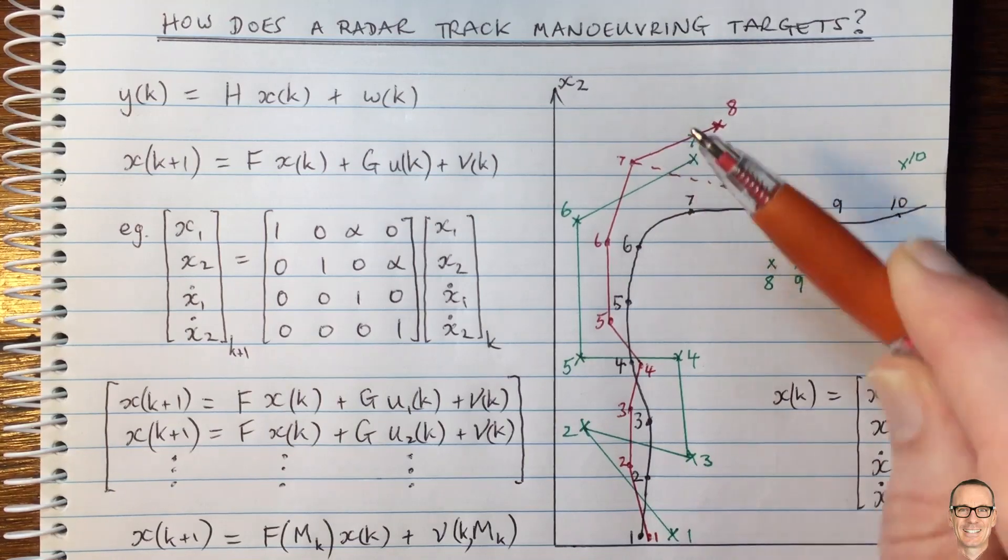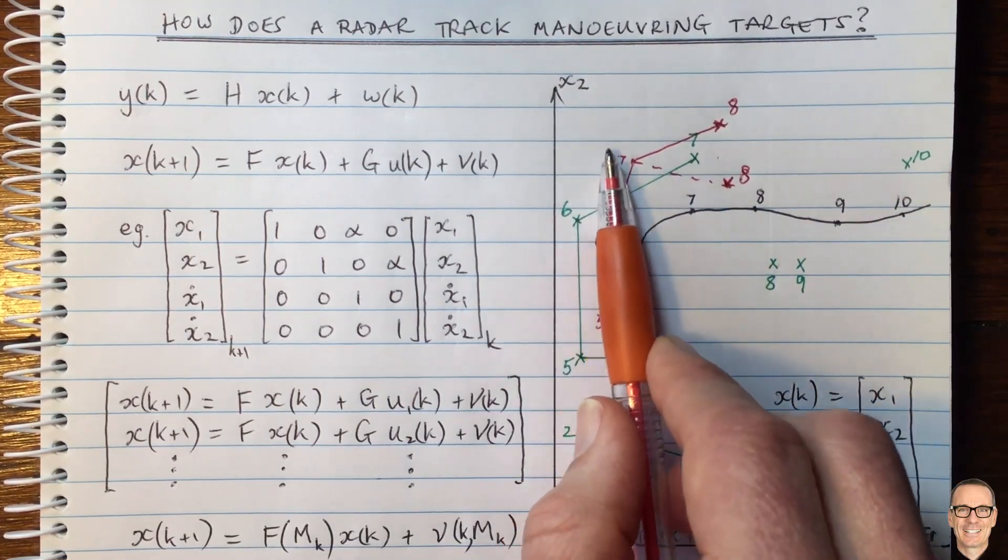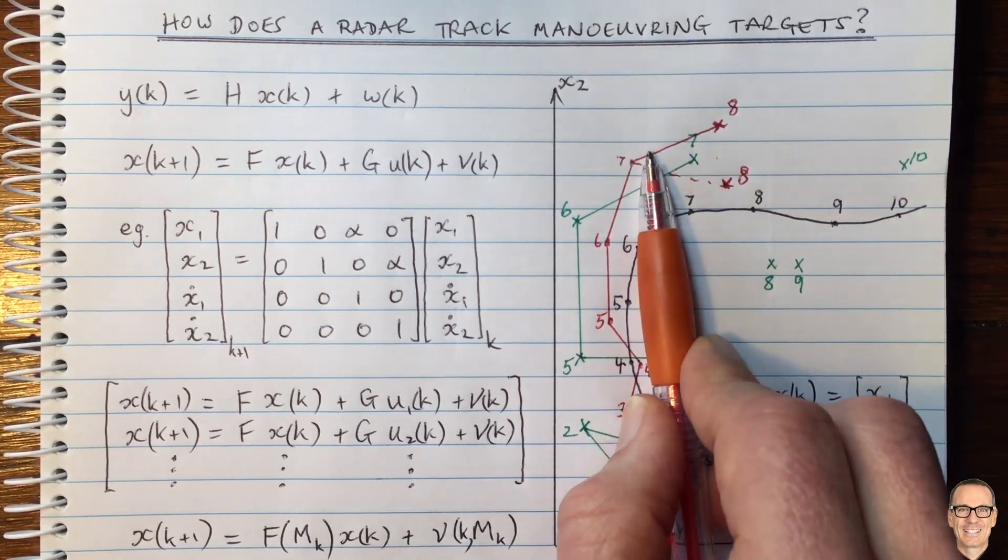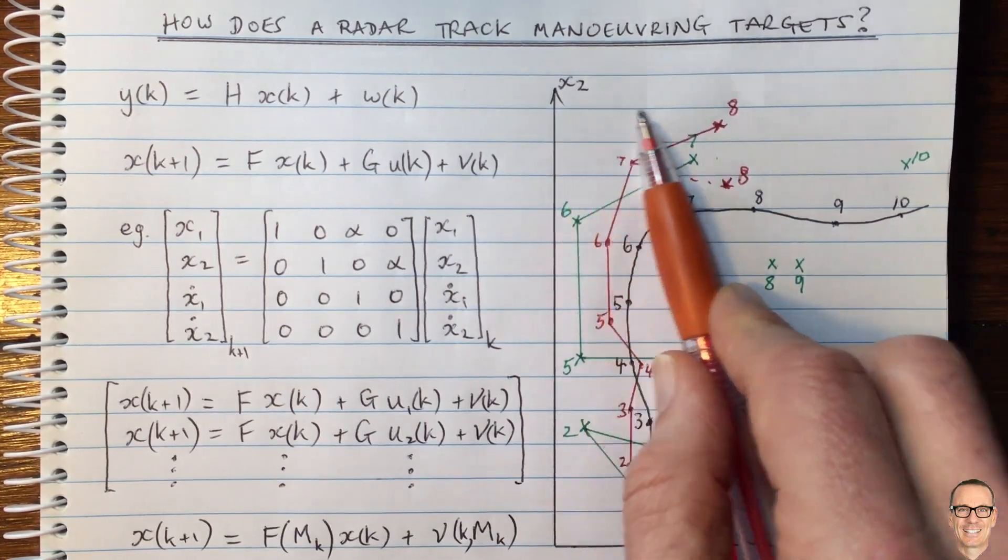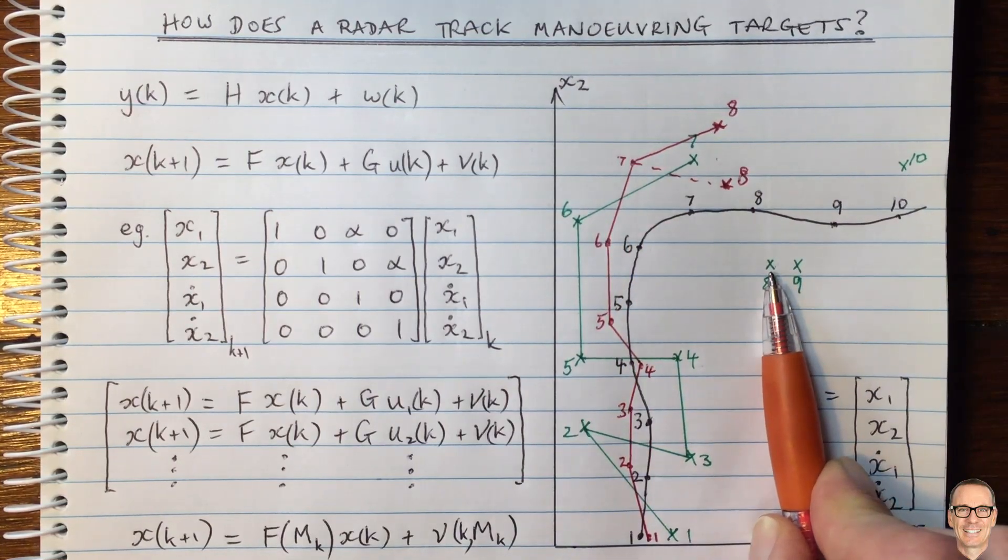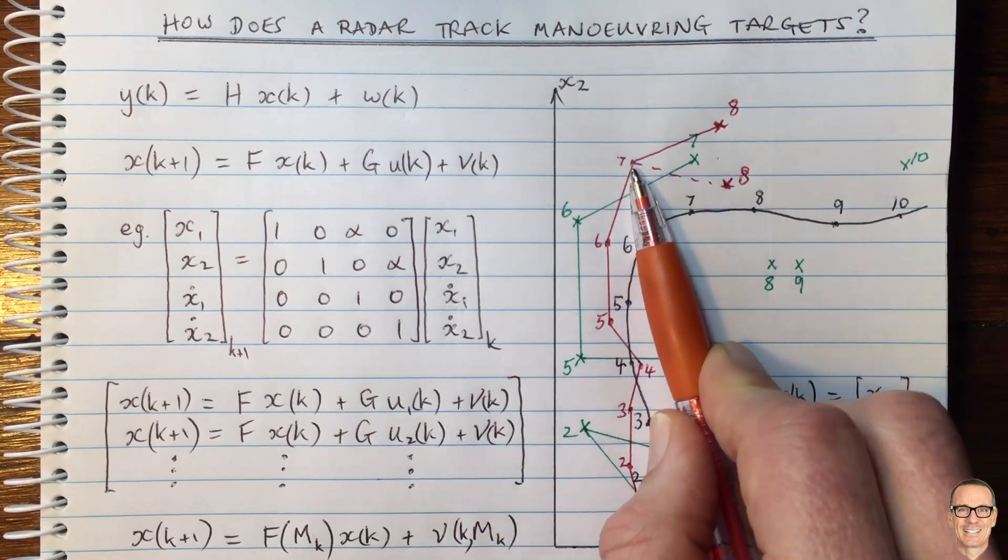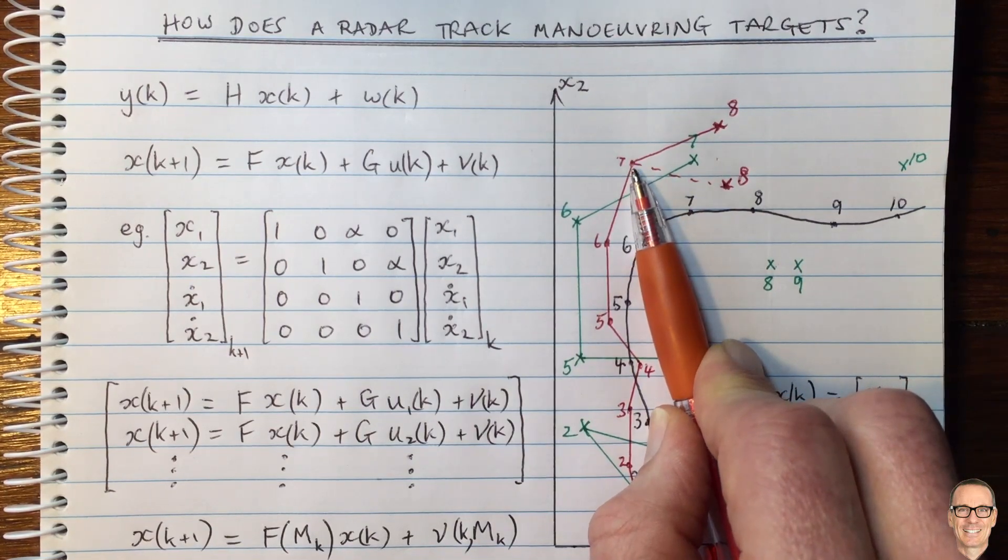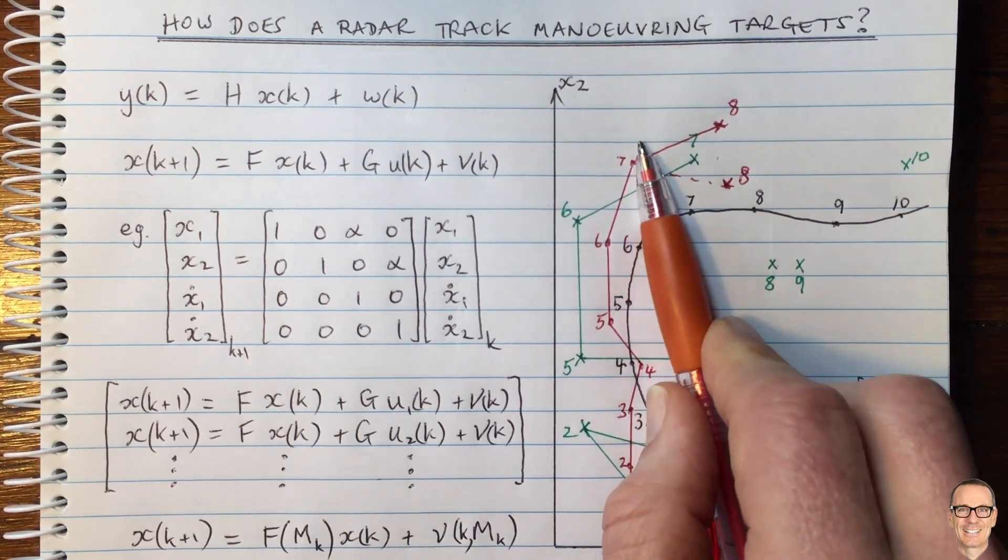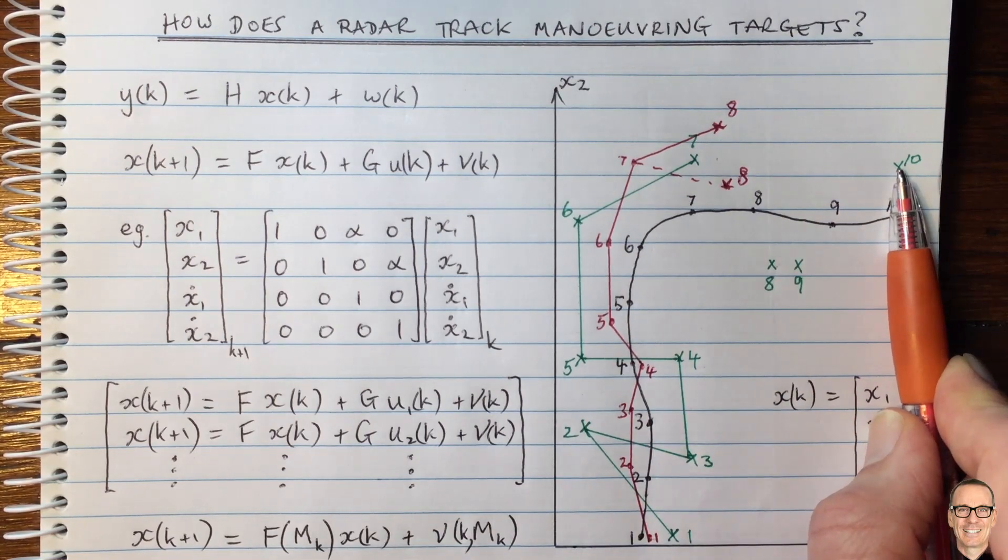And each one of those estimates is slightly different. They are sampled according to particle filtering and you then have a range of estimates and some of them will be matching up more closely with the measurements than others. Then there's a process of pruning the poor estimates and adding to the good estimates and having essentially a cloud of prediction locations going forward. And so that's another approach with particle filtering.